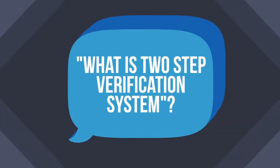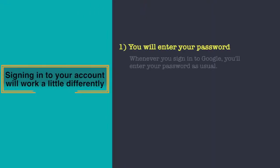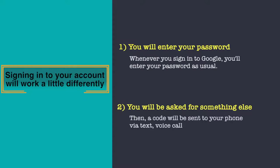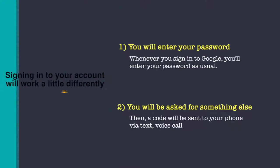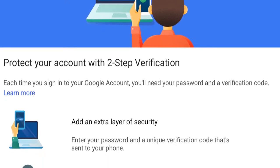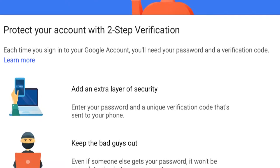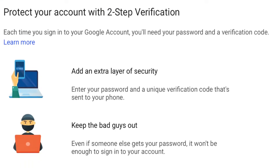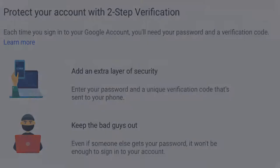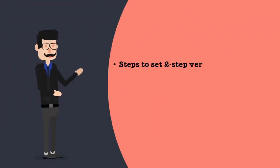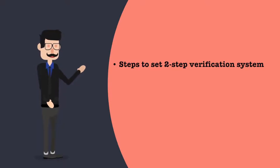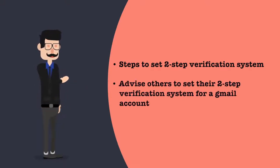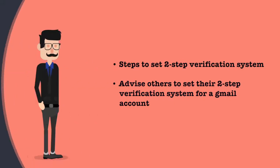In a two-step verification system, anytime an unknown device is used to sign into your Google account, the user has to provide a verification code in addition to the password. It's not enough for hackers to just get your password — they will also need physical control of your phone or computer to access your account. Let us see the steps to set up two-step verification for a Gmail account, and essentially your entire Google account for all connected services.